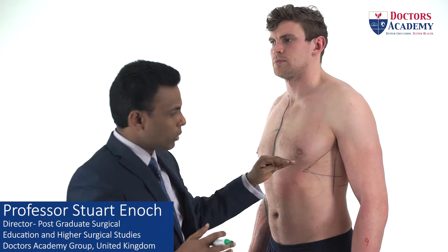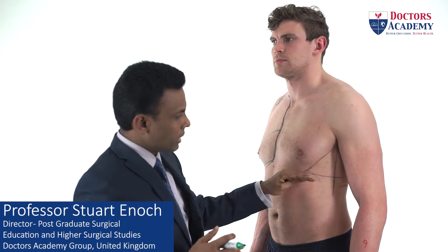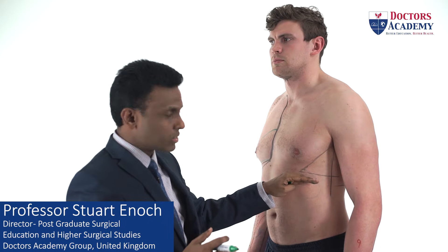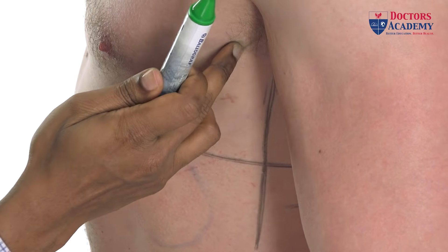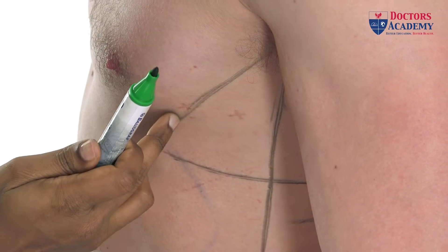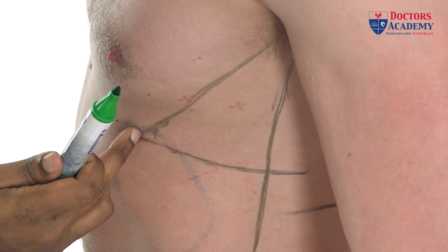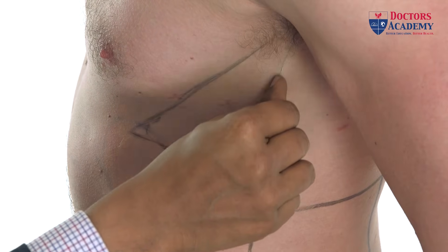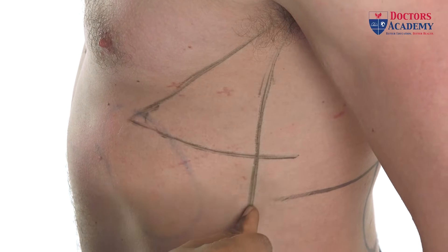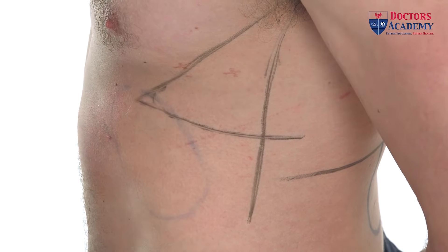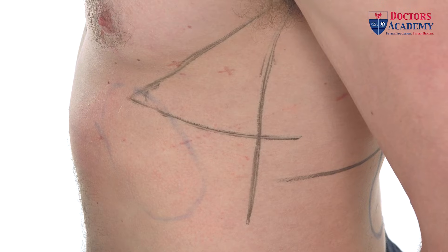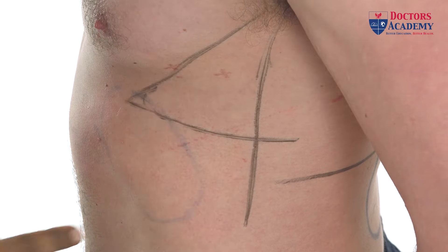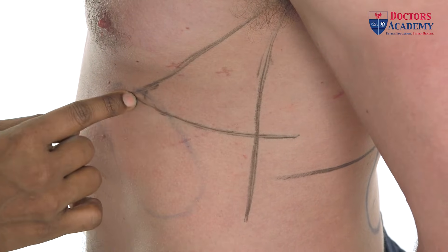In this section, we are going to look at the safe triangle for chest drain insertion. The line drawn at the front here corresponds to the posterior border of the pectoralis major muscle. This is the mid-axillary line, which corresponds to the line of the long thoracic nerve.